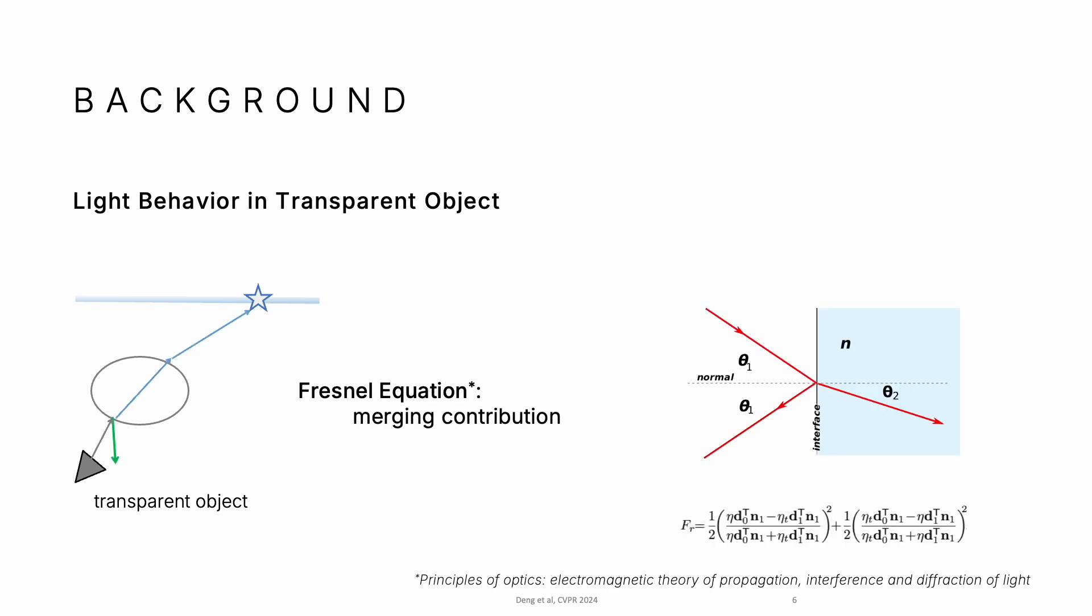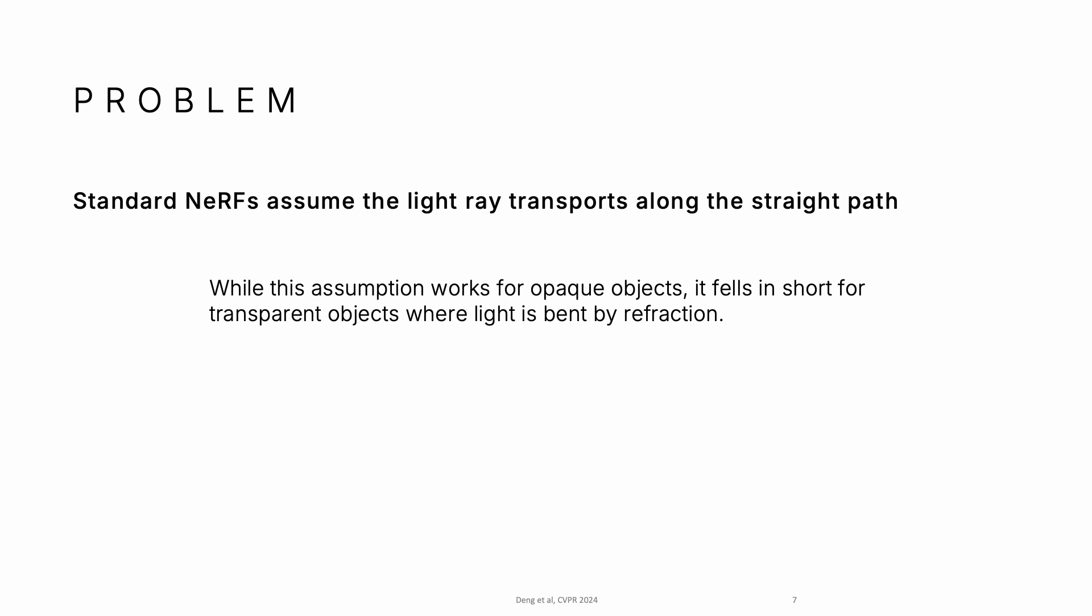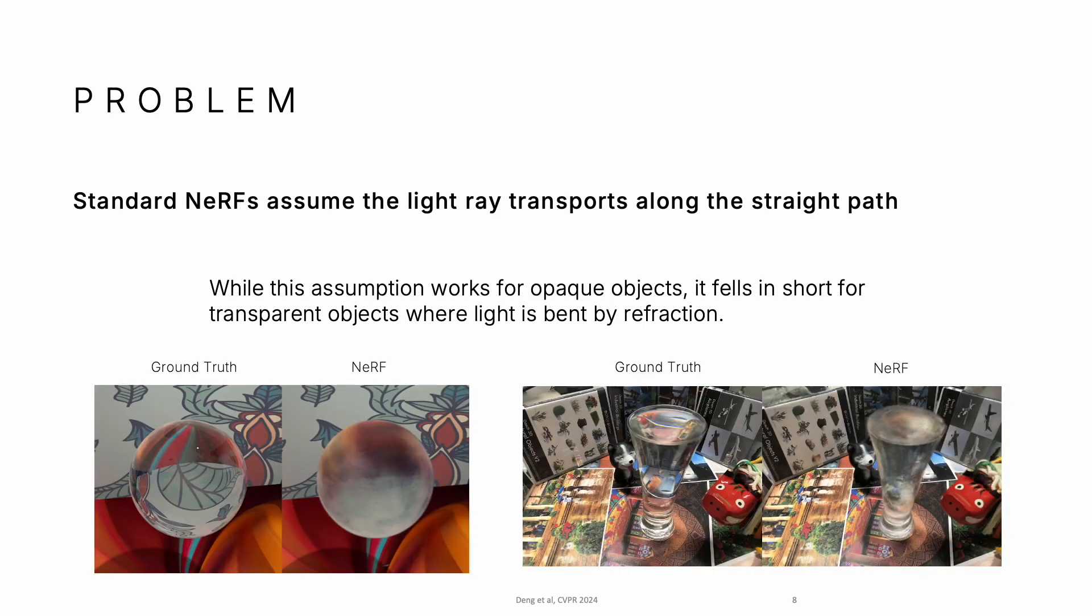According to Fresnel equation, the radiance of refracted and reflected rays are merged. Standard NeRF assumes light rays transport along straight paths, so they can't deal with transparent objects.